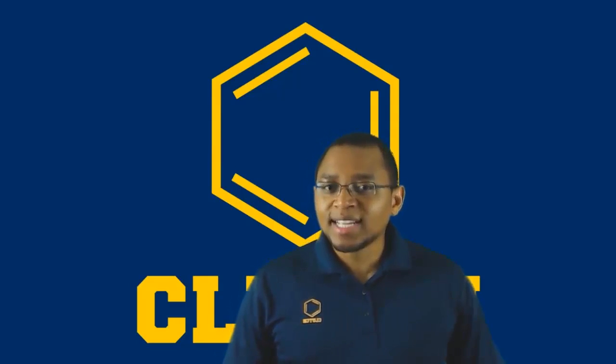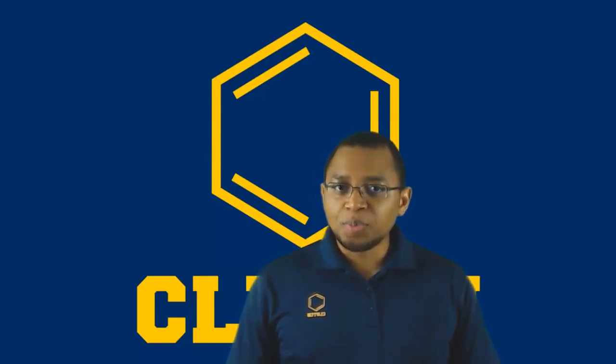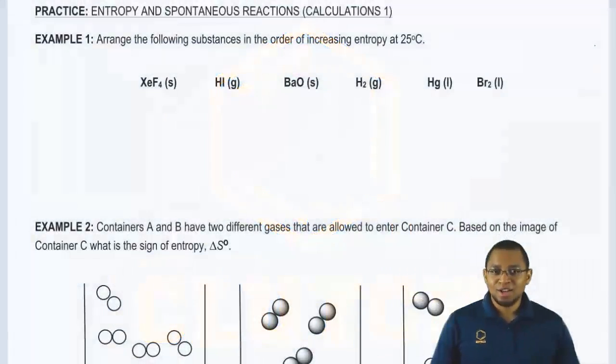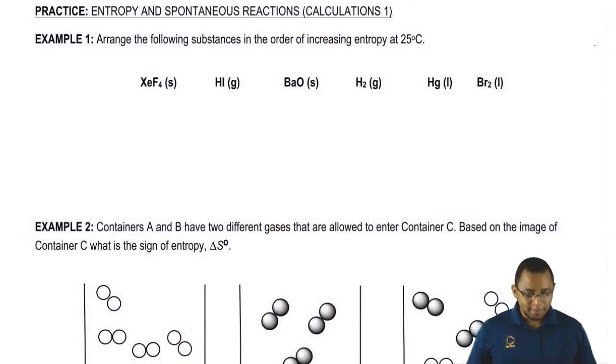Hey guys, in this new video, we're going to continue with our discussion of entropy and the way it relates to spontaneous reactions. Let's take a look at example one. In example one, it says arrange the following substances in order of increasing entropy at 25 degrees Celsius. So I want an order of increasing entropy, so that means least entropy to most entropy.